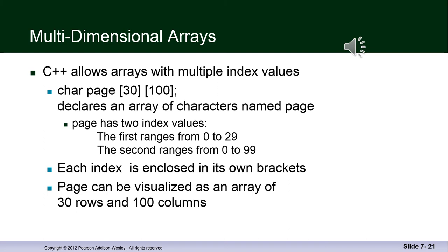C++ allows us to have arrays with multiple index values. So for example, here we're declaring an array of characters named page. And page has two index values. The first ranges from 0 to 29 and the second ranges from 0 to 99. Each index is enclosed in its own brackets. So page can be visualized as an array of 30 rows and 100 columns.